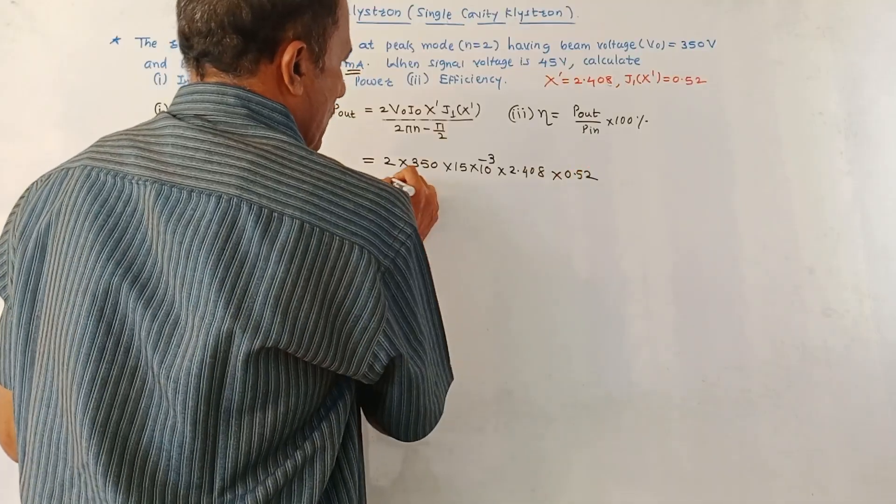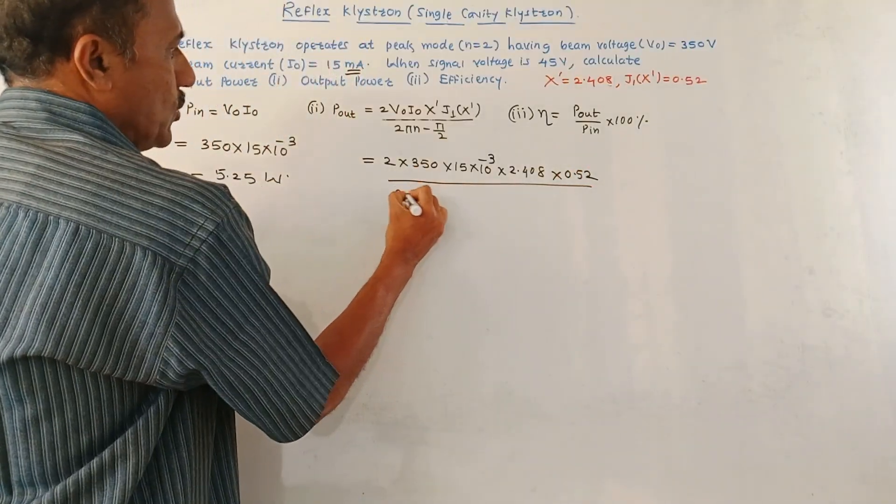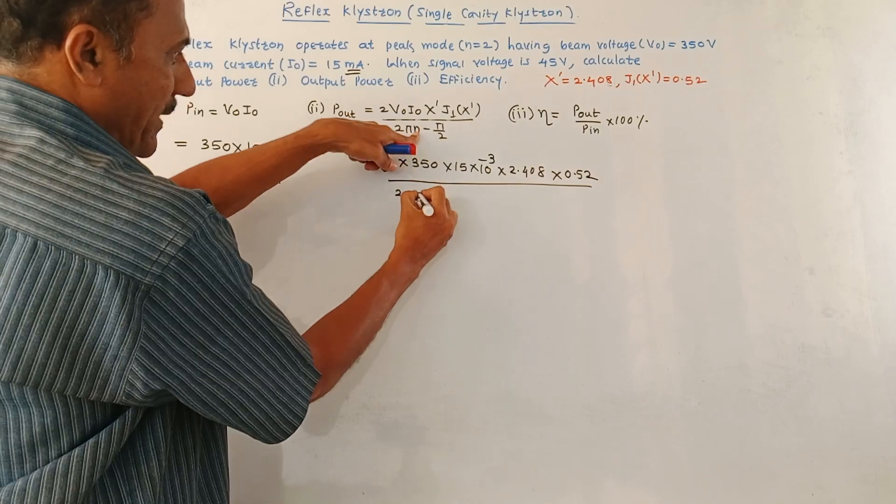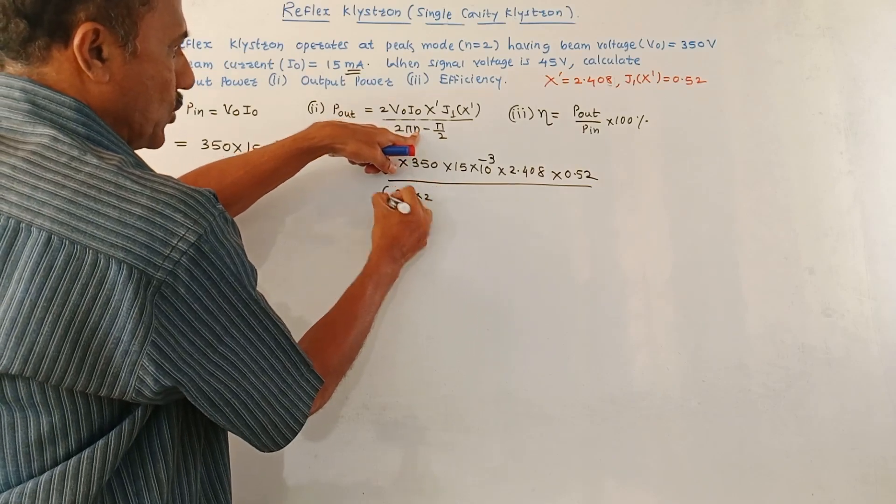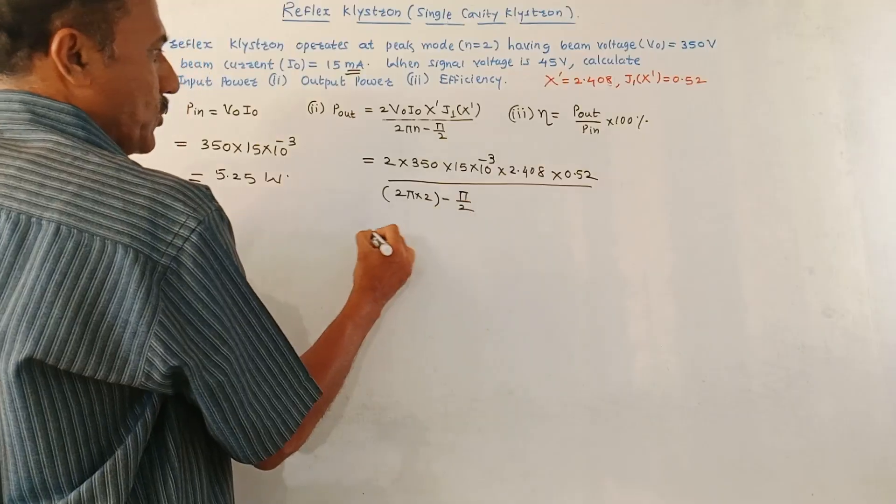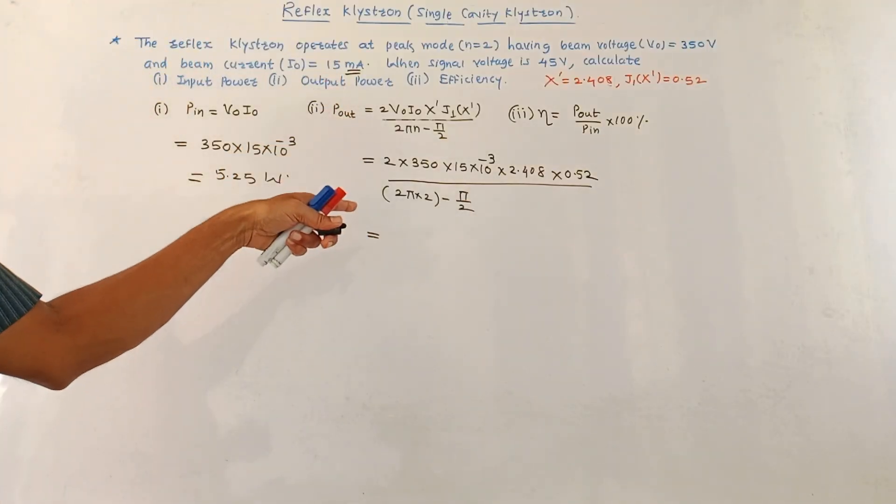It is 0.52 divided by 2.408, so pi n value of n is 2, so 2 pi into 2 minus pi by 2. If you solve this on the calculator, then the answer of output power is 1.196 Watt.